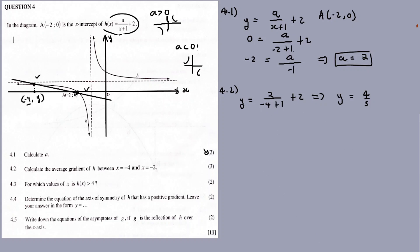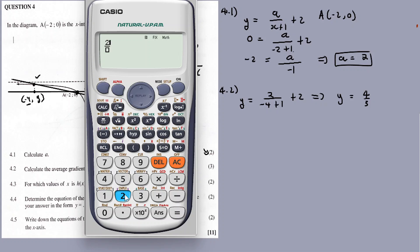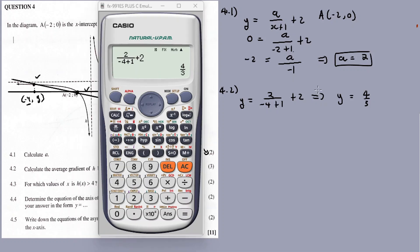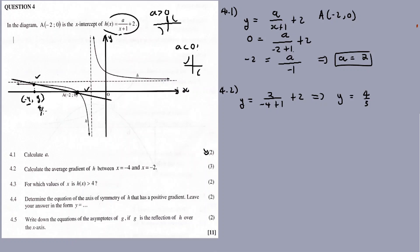So y is equal to 2 over x plus 1, plus 2. What is the value for x? Minus 4 plus 1 plus 2. Therefore y equals 2 divided by negative 3, plus 2. So that is negative two-thirds plus 2, which is negative 6 over 3 plus 6 over 3... negative 6 plus 2 is negative 4. So y is equal to 4 over 3. Now we can find the average gradient. So the average gradient m equals y2 minus y1 over x2 minus x1. Point 1 is x = -4, y = 4/3. Point 2 is x = -2, y = 0. So y2 is 0 minus y1 which is 4 over 3.